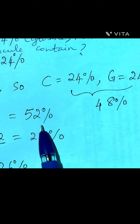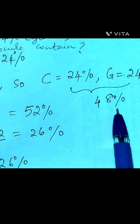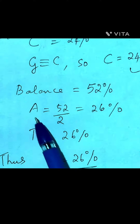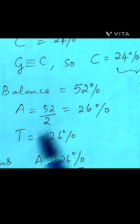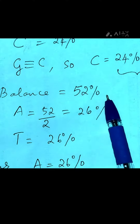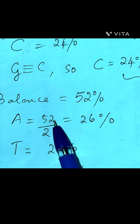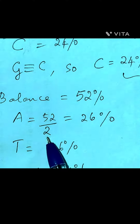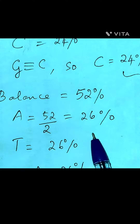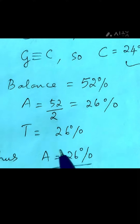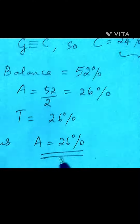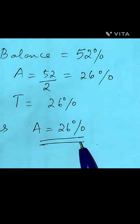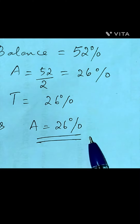The balance out of 100 will be 52% — 100 minus 48 is 52%. So adenine and thymine both amount to 52%. We divide 52 by 2 to get 26%. Thus, adenine's amount will be 26% in that DNA molecule.